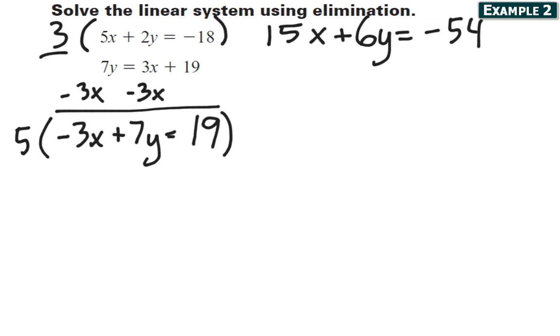Notice that I'm multiplying it by a different number than I multiplied the first equation by. I'm targeting the x term and I want to make its coefficient the opposite of what it is after I scaled that first equation up. So when I do the distribution here, I'm going to get negative 15x plus 35y equals 95.